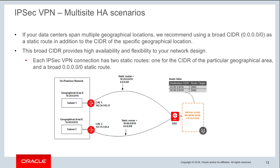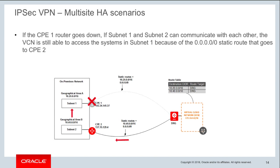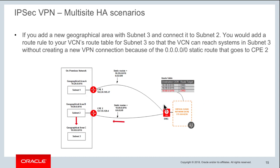This broad CIDR gives you high availability and flexibility. For instance, if CPE 1 connected to geographical location A goes down, you can still reach location A through the IPSec connection to CPE 2, because the 0/0 route is attached to that connection as well. Similarly, if your organization adds a new geographical area like subnet 3, initially connected only through subnet 2, you just add an additional route rule in your route table and gain connectivity to that new region — all because of the broad CIDR used in your IPSec connection.